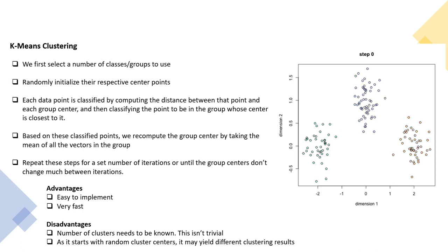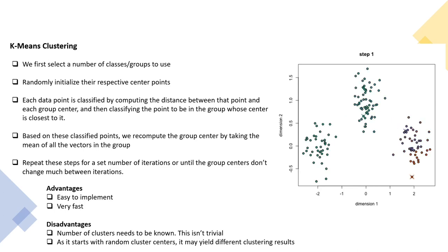The advantages of k-means clustering are that it is easy to implement, very intuitive, and very fast. The disadvantages are that the number of clusters must be known in advance — a non-trivial issue. We saw a method called the elbow method for finding the number of clusters. Also, since it starts with random cluster centers, it may yield different clustering results each run.